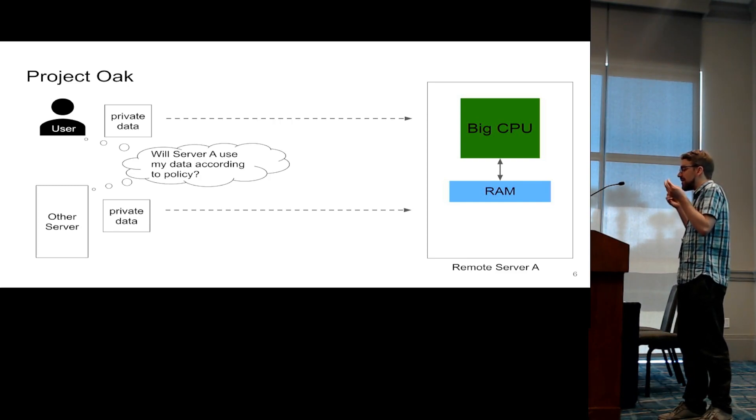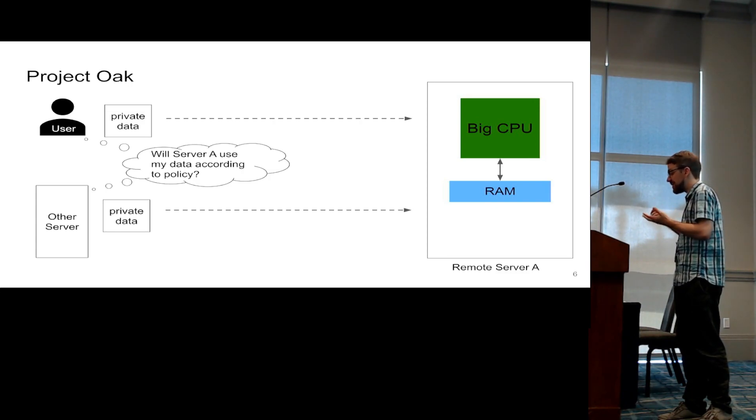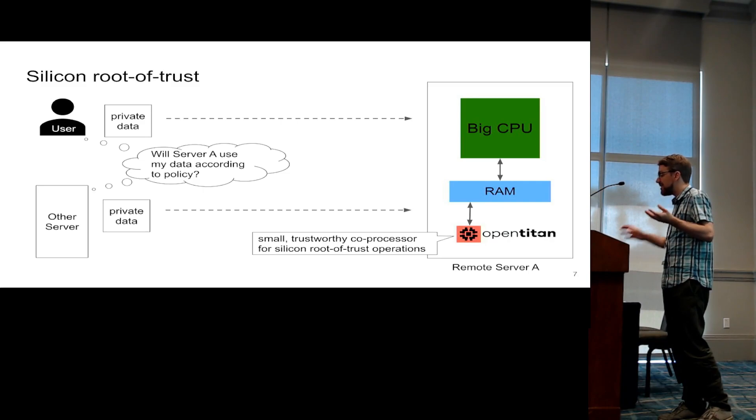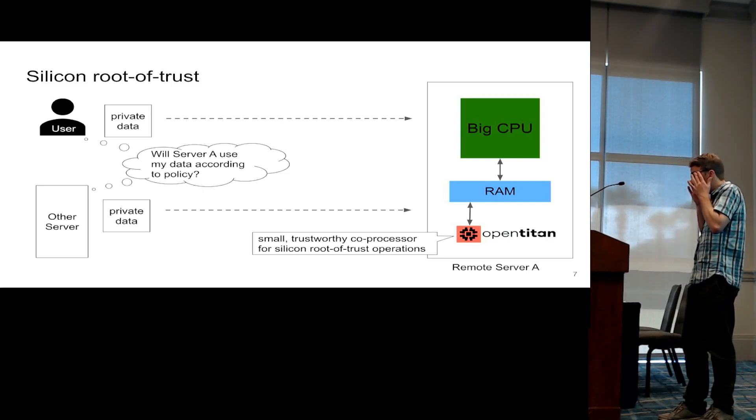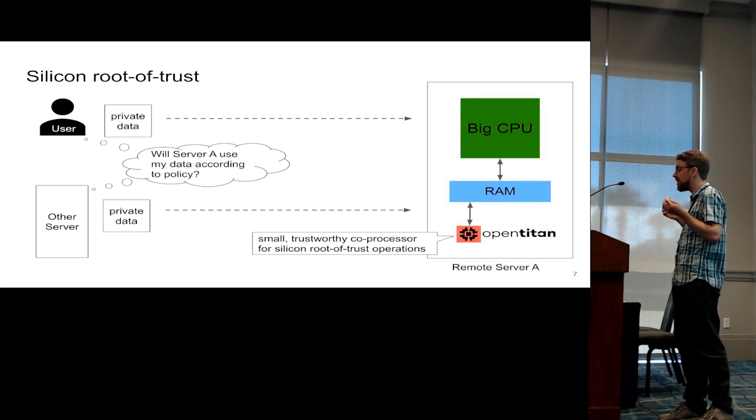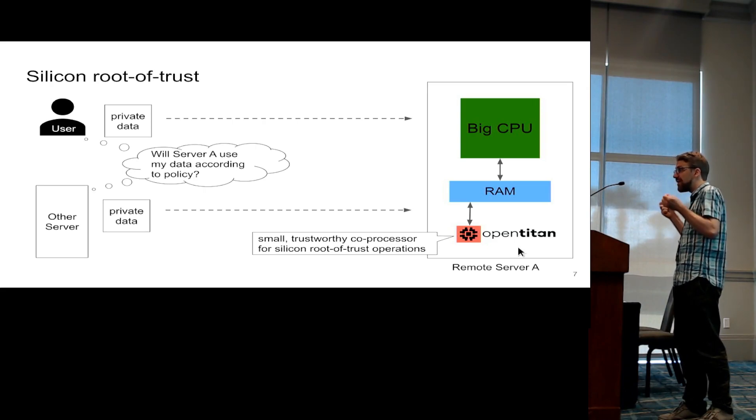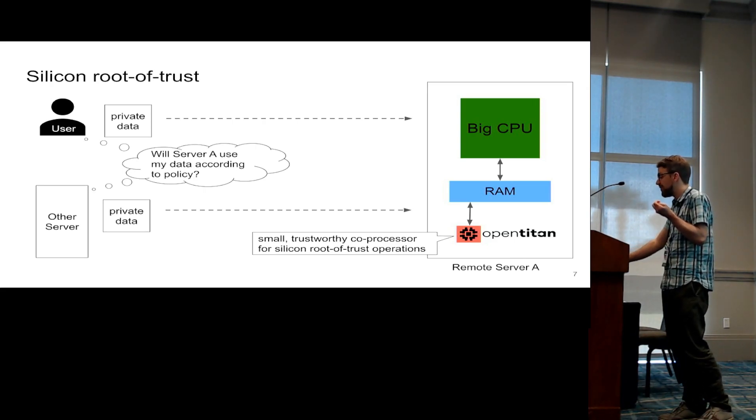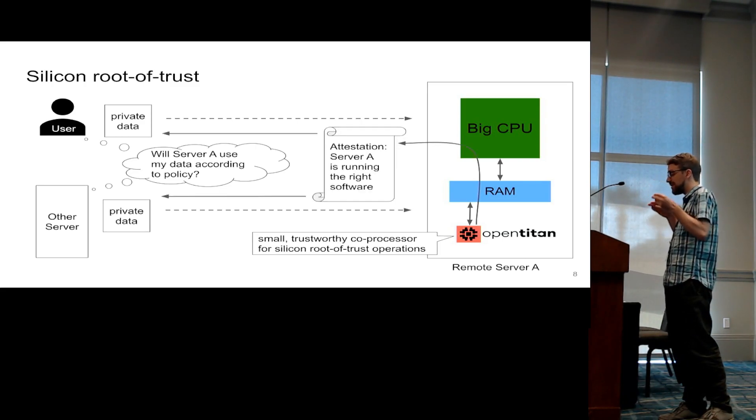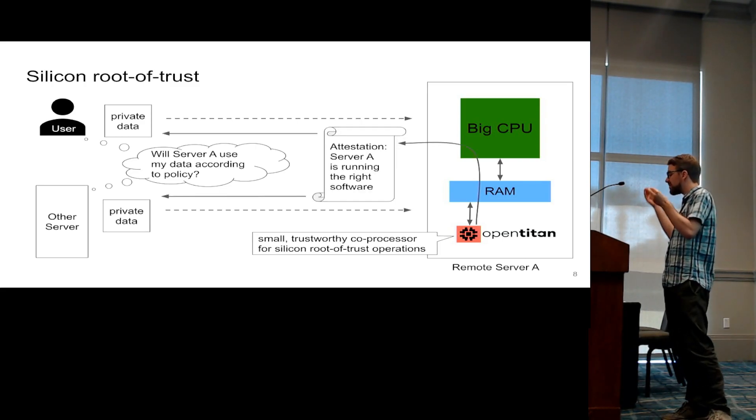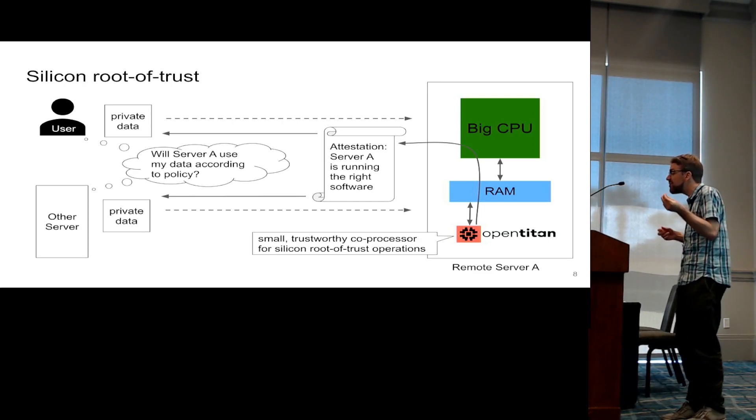it might wonder, well, how is this server going to use my data, and will it stick to some policies? Their idea is to use a silicon root of trust so that you can have a small trusted coprocessor that's verified to very high standards, and this small coprocessor will then use attestation encryption and crypto stuff,